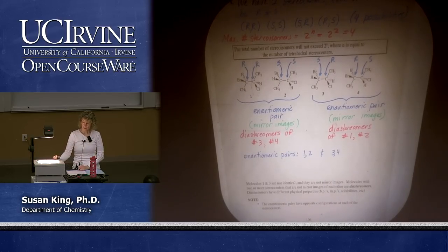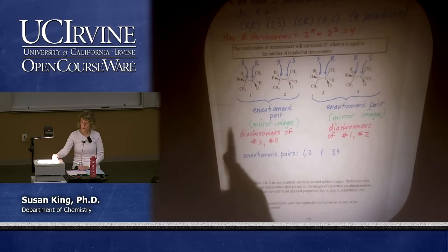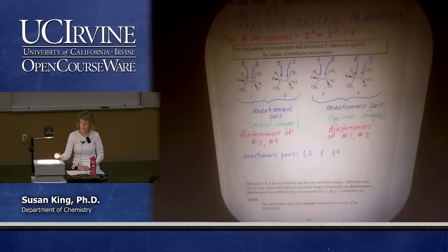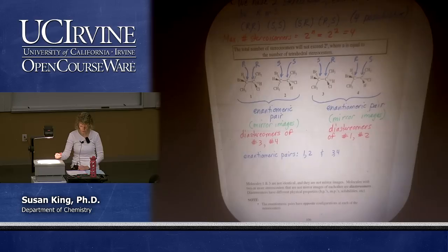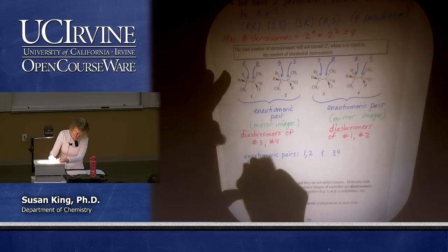Notice when we go to the enantiomer — we started off with RR and we go to the enantiomer by switching the stereochemistry at both centers. If we go from 1 to 3 however, those are diastereomers — 1 and 3 are a diastereomeric pair. We have the same stereochemistry at one of the stereocenters and the opposite at the other, and that's what you're going to look for.